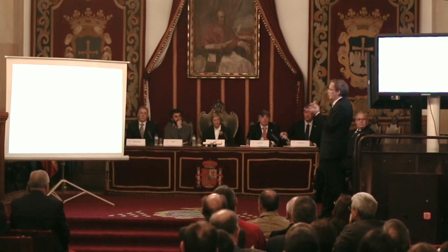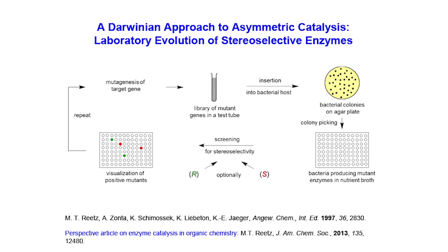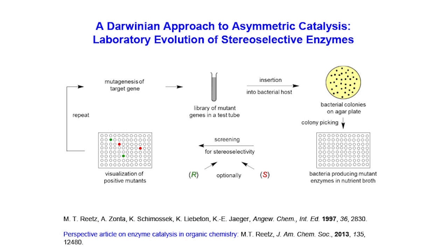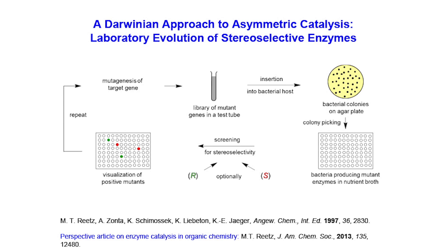Then we have the seminal paper by Frances Arnold in 1993 — she went through six rounds of error-prone PCR in order to increase the robustness of a proteinase. But as organic chemists, we were interested more in the heart of synthetic problems — namely, asymmetric catalysis. Here you see the general scheme giving a glimpse into how things are actually done in the laboratory. We start with a gene — the DNA of an enzyme that does not do what we want — and subject it to one of those methods of gene mutagenesis to get a library of mutant genes in the test tube.